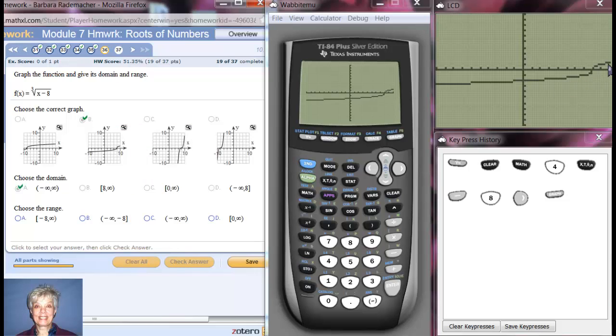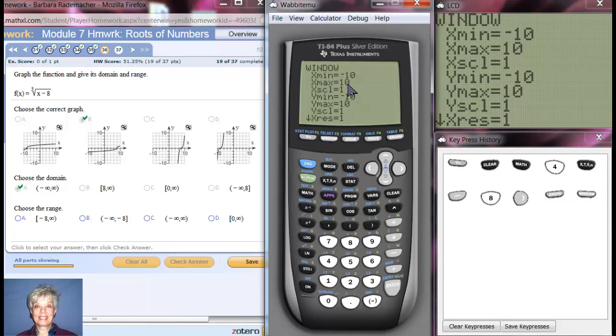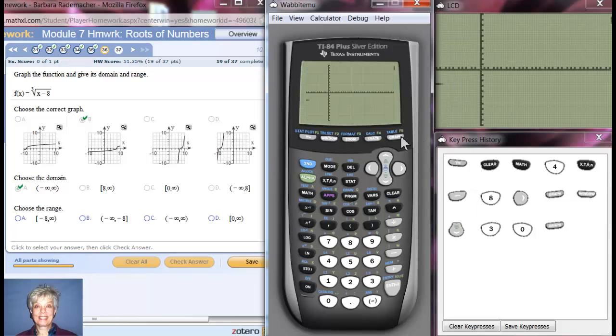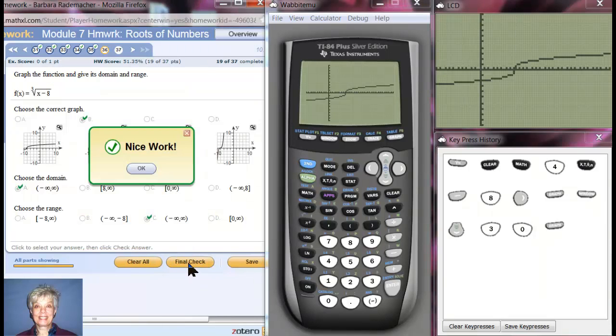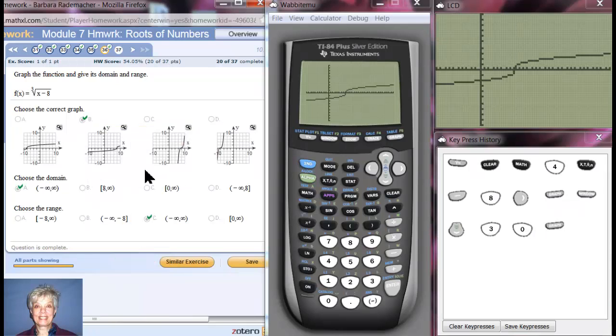And the range. Well, I'm going to change the window just so you can see this a little better. Make it go out to the right a little further. Let's make it go out to 30, and then graph. See, this is going to go to the left and down forever, to the right and up forever. So our range is going to be negative infinity on the y-axis to positive infinity on the y-axis. There we are.